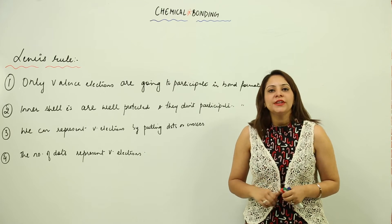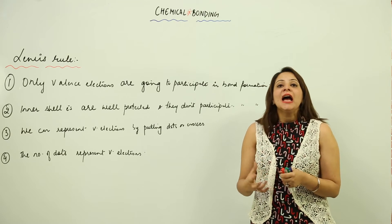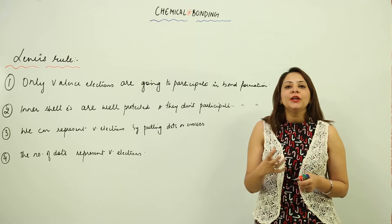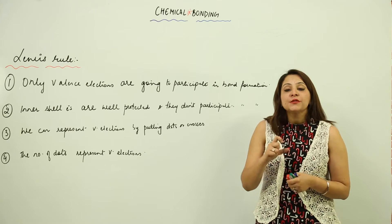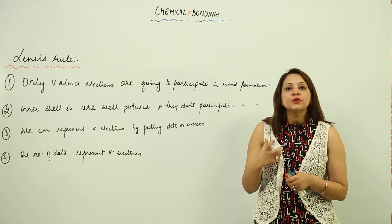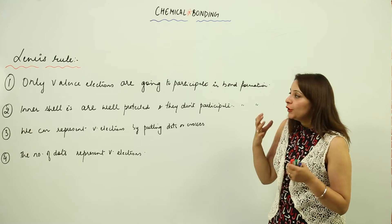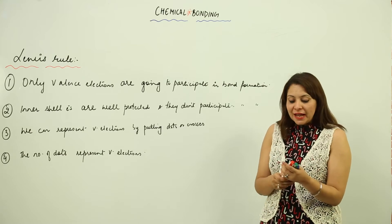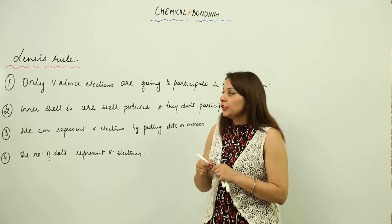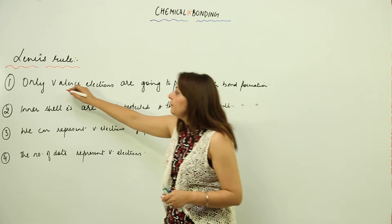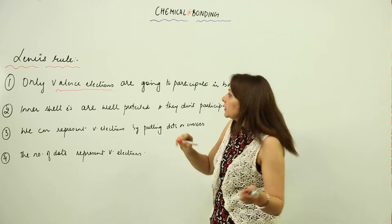Before going to start with the formation of the chemical bond, I just want to make you aware of the Lewis rules because we need to use these rules while forming the bonds. So the first rule is that in the bond formation, only valence electrons are going to participate.